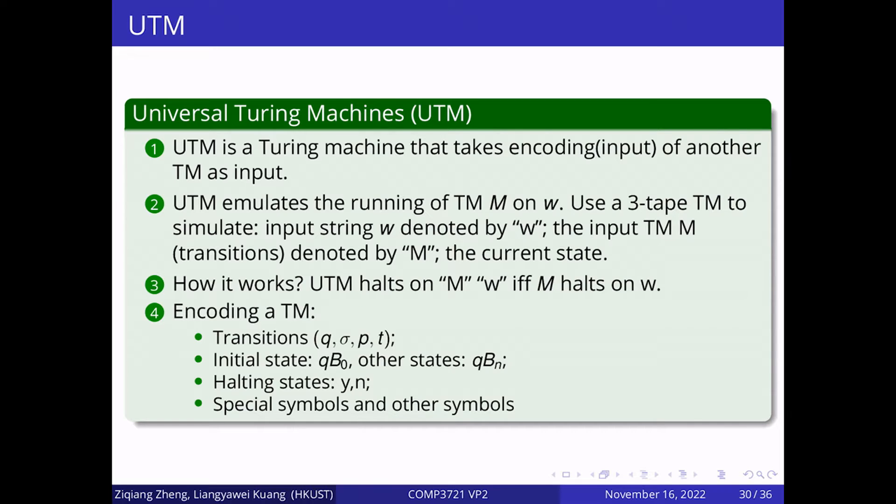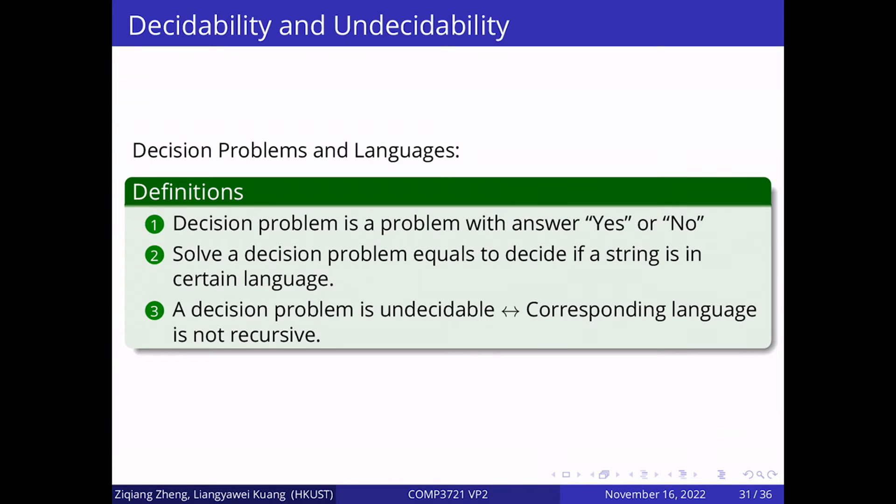We then talk about a very important Turing machine, the Universal Turing Machine, UTM for short. UTM is a Turing machine that takes the encoding of another TM as input. We use a three-tape Turing machine to simulate the UTM that runs on the string W. We encode a Turing machine. The transition is applicable including states P and Q, symbols, schema, and T. We have designed some rules to encode states and symbols for running the UTM.